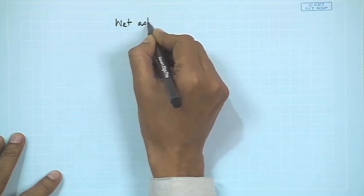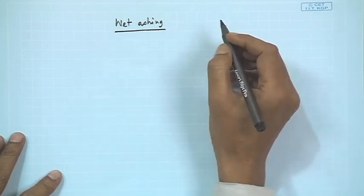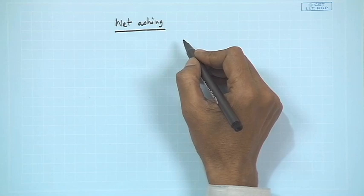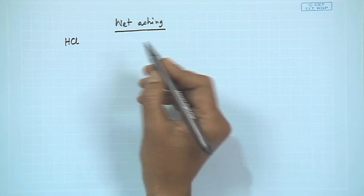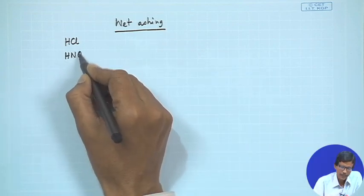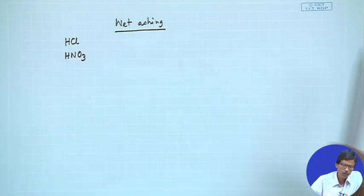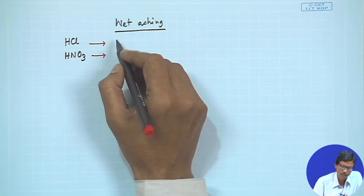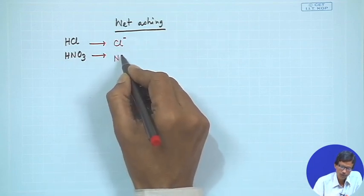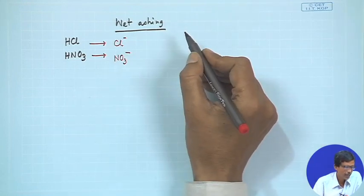Welcome to this eighth class of analytical chemistry, where we are discussing the wet ashing process — we can dissolve something, meaning the metal complex can be dissolved by destroying the organic part. During the treatment, if we use hydrochloric acid and nitric acid for the treatment of any unknown sample, this can give rise to contamination of Cl⁻ and NO3⁻ in the solution.